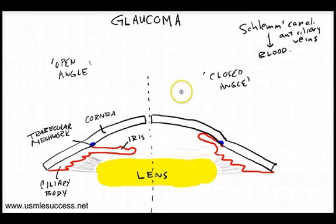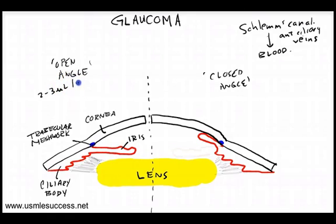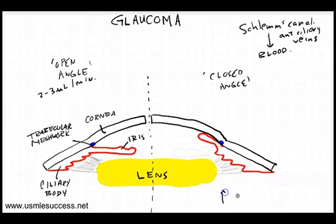Normally, we create approximately 2 to 3 microliters of aqueous humor per minute. Now if this increases or if it gets blocked, then pressure within our eye is going to start to increase.